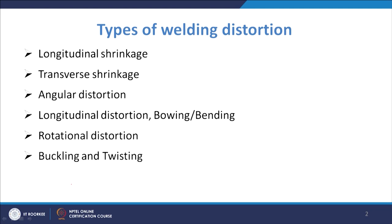The distortions are primarily of different types: longitudinal shrinkage, which takes place along the longitudinal direction; transverse shrinkage, which occurs in the transverse direction; angular distortion; longitudinal distortion or bowing/bending; rotational distortion; and finally buckling or twisting.